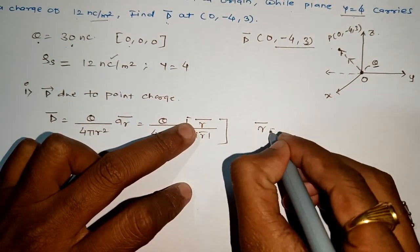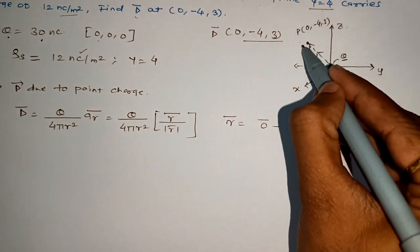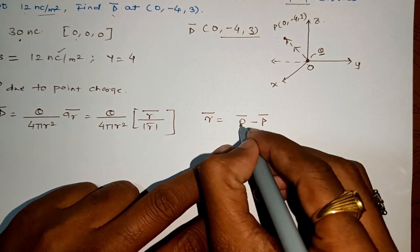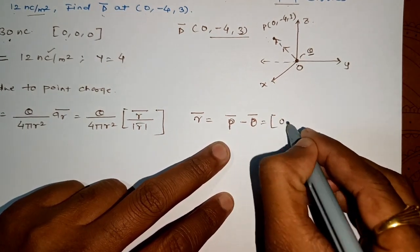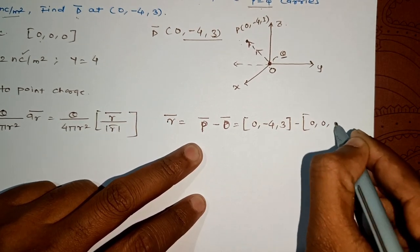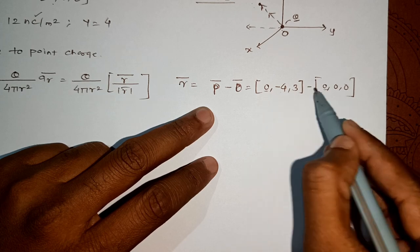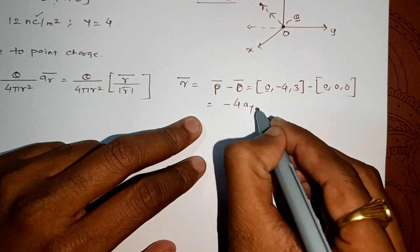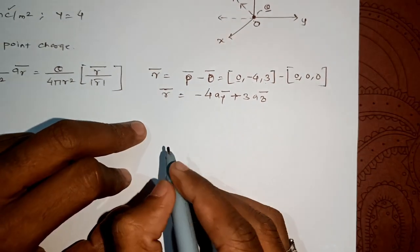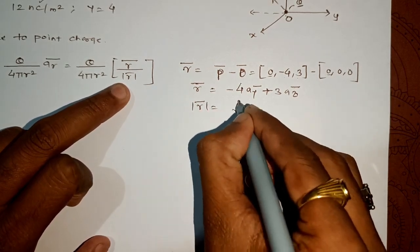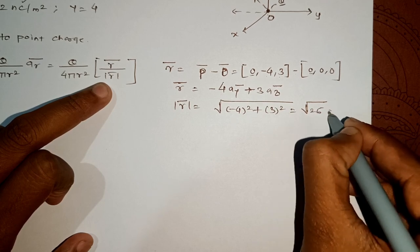Now let us find r-bar. r-bar = P-bar minus O-bar (end point minus starting point). P-bar is (0, -4, 3) and O-bar is (0, 0, 0). So r-bar = 0·ax + (-4)·ay + 3·az. The magnitude r = √((-4)² + 3²) = √(16 + 9) = √25 = 5. So the distance is 5.